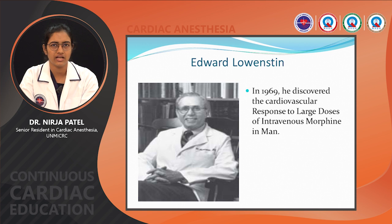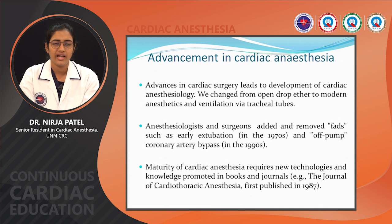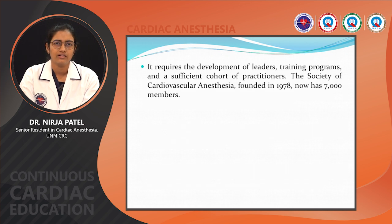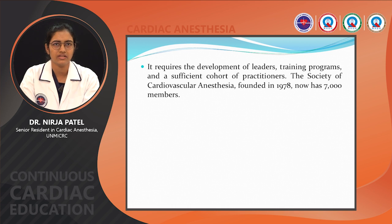Edward Lowenstein in 1969 discovered the use of large-dose morphine in cardiac anaesthesia. Advancement in cardiac anaesthesia was required because advancing surgery led to development in anaesthesiology — from open-drop ether to modern anaesthetics and ventilatory methods via tracheal intubation, from on-pump to off-pump surgeries, and from late extubation to early extubation. The maturity of cardiac anaesthesia required new technology and knowledge promoted by books and journals. The Journal of Cardiac Anaesthesia was published in 1987, and the Society of Cardiovascular Anaesthesia was founded in 1978, now with 7,000 members.